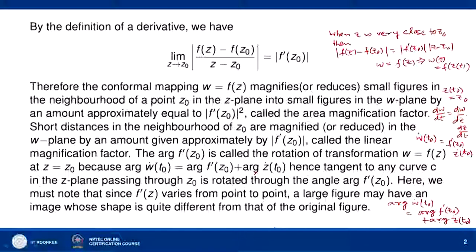This equation tells us that the tangent to the curve c at the point t = t0, that is z = z0, is rotated by an angle equal to arg(f'(z0)) in the w-plane. So the tangent to any curve c in the z-plane passing through z0 is rotated through the angle arg(f'(z0)), and that is why arg(f'(z0)) is called the rotation of the transformation w = f(z) at z = z0.